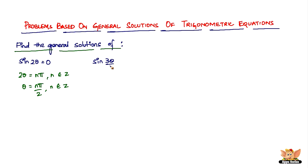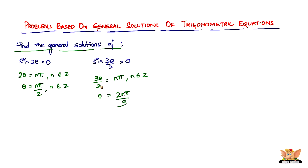Let's solve another problem. We've got: find the general solutions of sine 3 theta divided by 2 equals 0. We know that the general solution of sine theta equal to 0 is n pi. So in this case it will be 3 theta divided by 2 equals n pi, where n belongs to integers. Therefore theta equals 2 n pi divided by 3, where n belongs to integers.